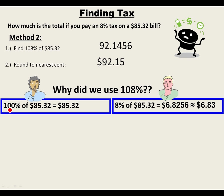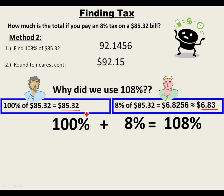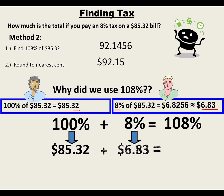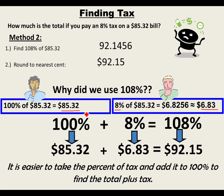Here's the thinking: 100% of something is itself — $85.32. 8% of $85.32 is the tax, $6.83. So 100% plus 8% equals 108%. You're adding the tax percentage directly onto 100% and finding that percentage of the original amount.